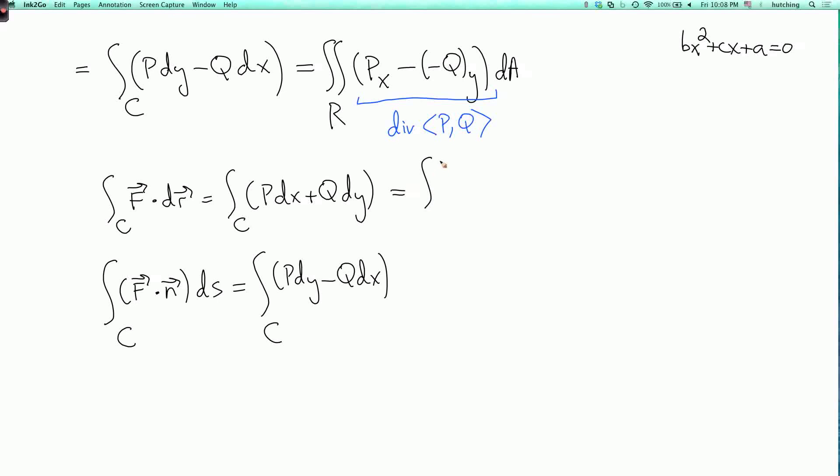And then if you do Green's theorem, so the usual Green's theorem, sorry, this is the integral over r. So you get q_x minus p_y dA, which is sort of like the curl. Well, here we get the divergence. So this two-dimensional version of the divergence theorem is also quite useful.